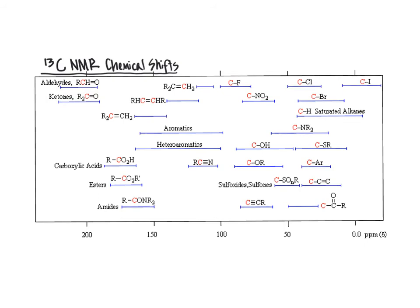Just like the aldehyde group in proton NMR was also very downfield, the same terminology applies: downfield is to the left, upfield is to the right. As we follow across the spectrum, we see decreasing electron density surrounding the particular carbon of focus. We can use this table as a tool when determining possible chemical structures for a molecule, piecing together what functional groups are present based on where the chemical shift shows up. This guide is included in your packet of information that goes along with NMR so that you will have access to it when solving chemical structures.